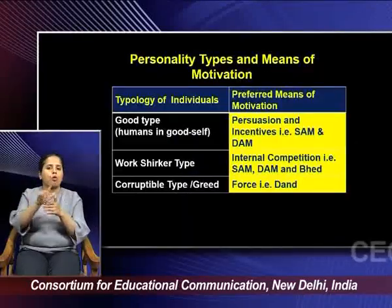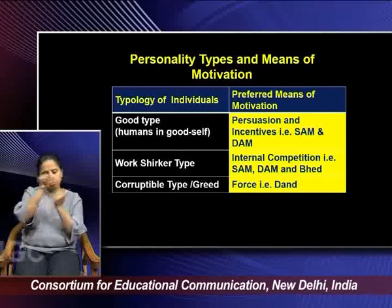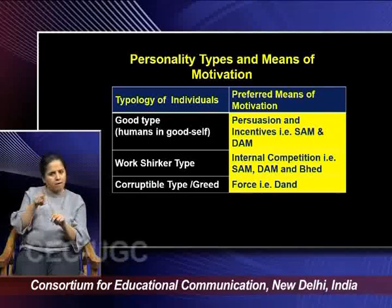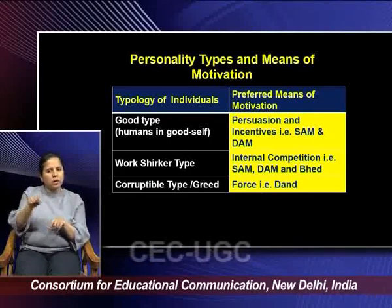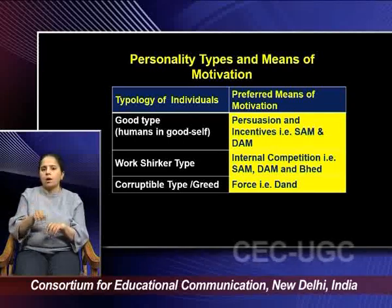The second category is the work shirker type. If you find the traits of a work shirker in your employees, you need to create internal competition, which means you have to include Bhed into your strategy. Sam and Dam remain the same, but we are inculcating Bhed into our strategy to motivate that employee who is of the work shirker type.